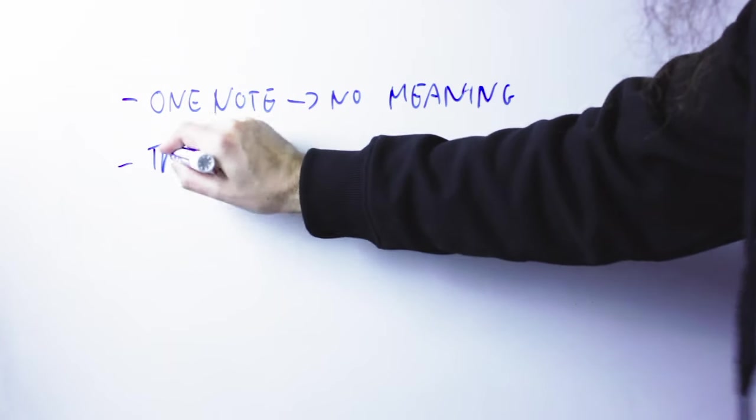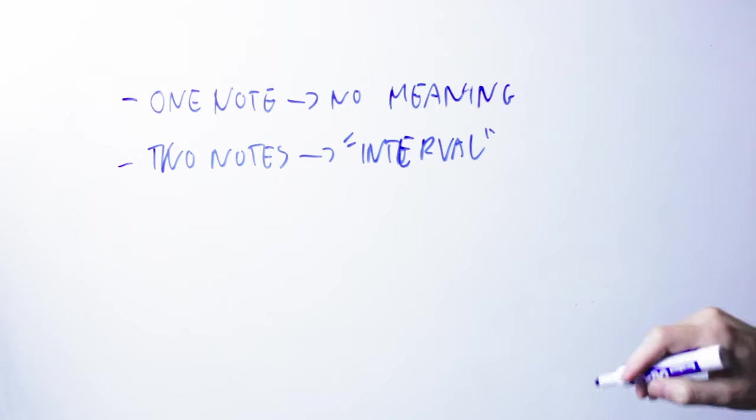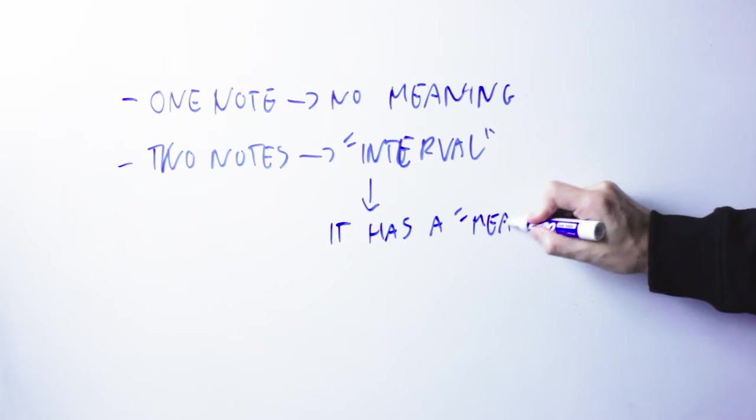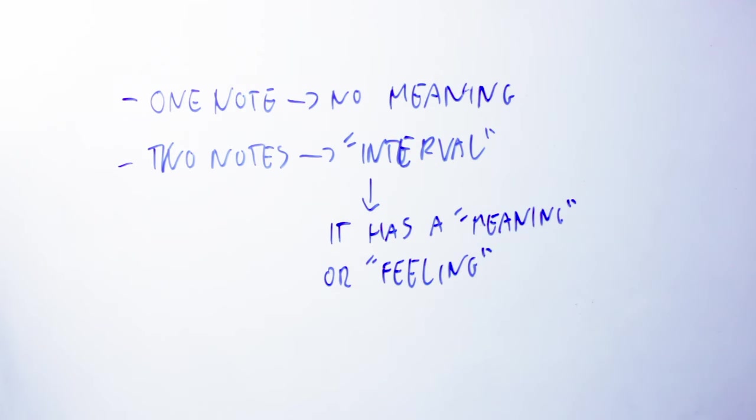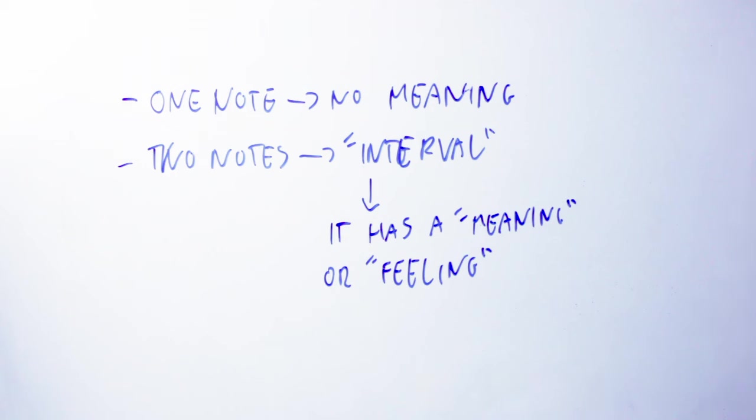If I play two notes, those two notes form what we call a dyad, or in some cases we call it an interval, meaning that the distance between those two notes tells you something and gives you a specific feeling. And the feeling depends only on the distance between those two notes. Some of those feelings are nice, for lack of a better word. Some of those feelings are less nice or even downright nasty.